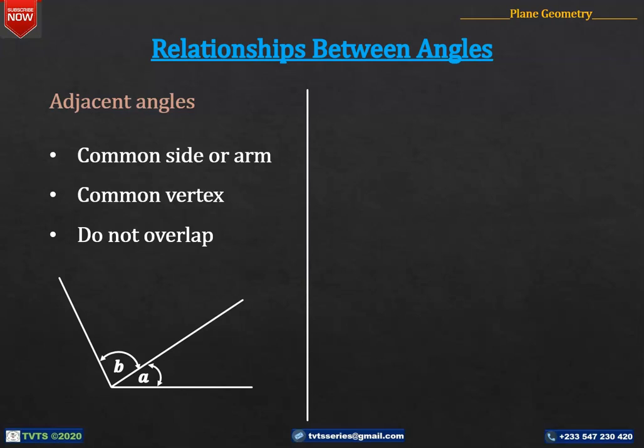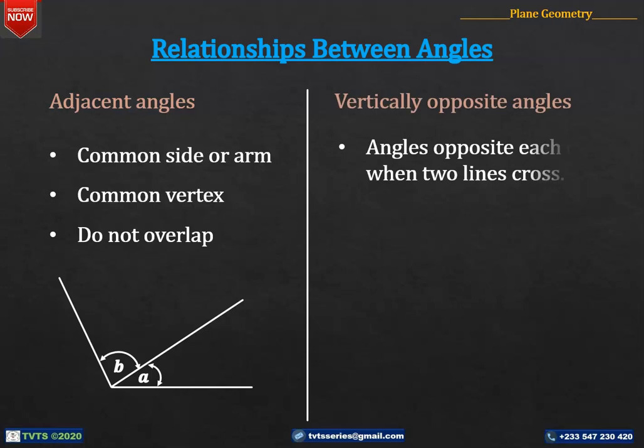Next are vertically opposite angles. These are two angles that are opposite to each other when two straight lines cross. Vertically opposite angles are always equal.